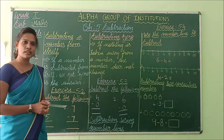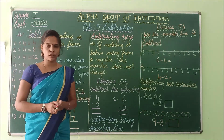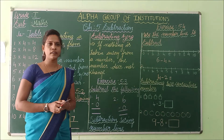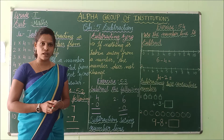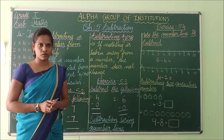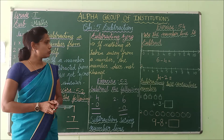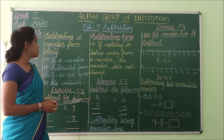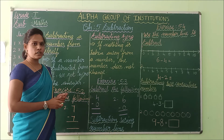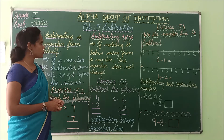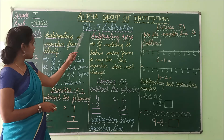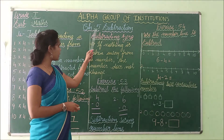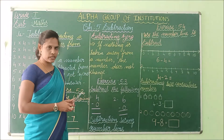Children, you have to practice the 4 times table. You have to write it 2 times in your classwork. Now we move on to the chapter. Today we are going to see Chapter 5 — Subtraction.